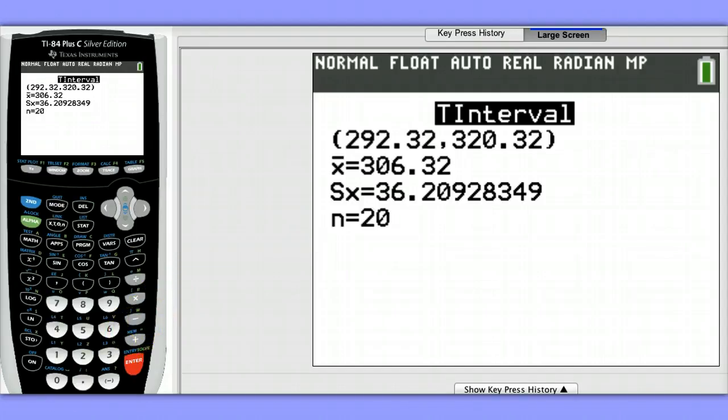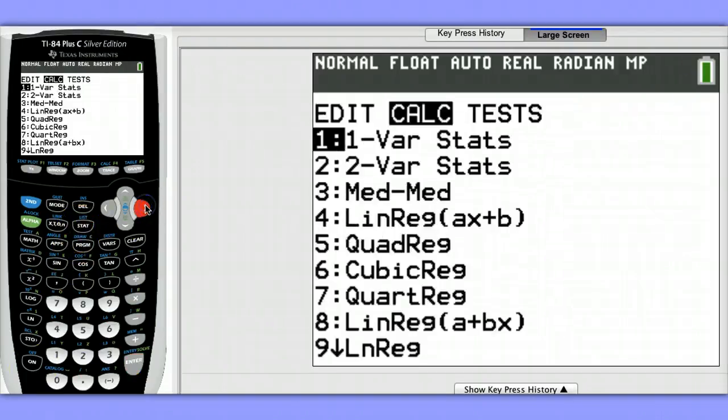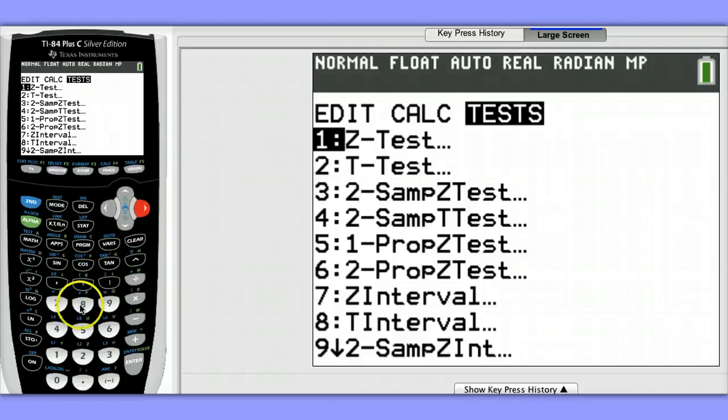Now let's take a look at an example that involves summary statistics. For this confidence interval, we'll hit stat, go over to test, choose option eight, TInterval.